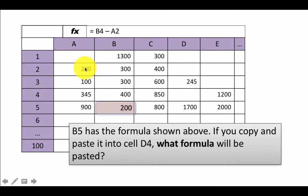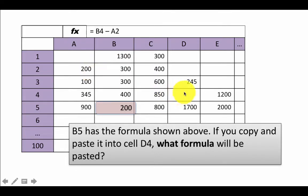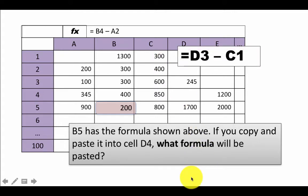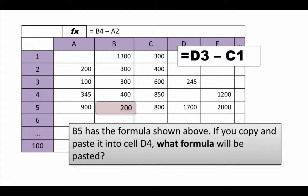And what is A2 with respect to B5? It's three rows above, one column to the left. So three rows above, one column to the left. If you are in D4, three rows above is row 1, and one column to the left is column C. So that's going to be C1. Therefore what is going to get pasted is equals D3 minus C1. D3 is one cell right above it, and C1 is the cell three rows above one column to the left. This is a highly contrived scenario, but it confirms you understand relative addressing.